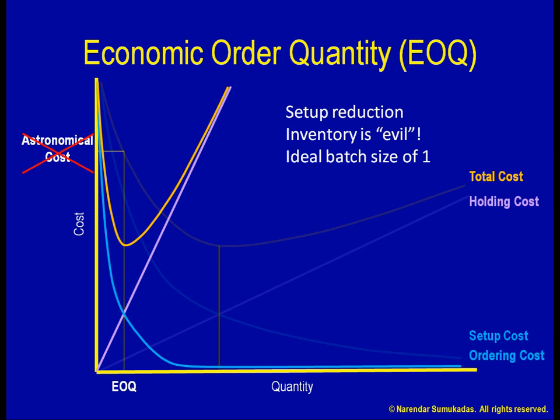A batch size of 1 is really the hallmark of a highly flexible flow process, with high customization and very low volumes. In contrast, lean systems are generally more applicable to settings with much higher volumes. Reducing setup costs allows us to reduce batch sizes even in such settings, allowing even a large volume process to be extremely nimble.